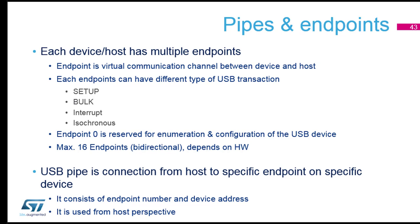Endpoint zero is for enumeration and configuration — it's a setup endpoint. When you plug a device, the host will need to know the device capability and purpose. For this, at the beginning, it will try to get the descriptors — a structure that defines all the behavior of your device: is it a mouse, how to connect it, which endpoint, which type of endpoint. All this information will be shared through endpoint zero. The maximum number of endpoints is 16 bidirectional according to the norm, but it really depends on your hardware — some devices go up to eight, others much more.